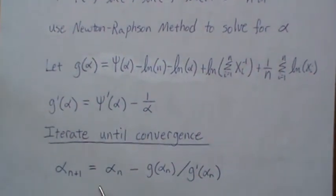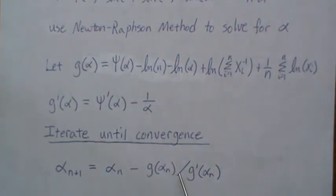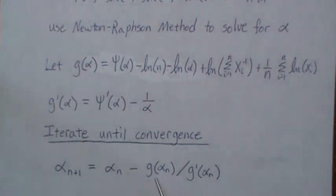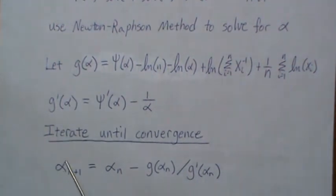So next, we iterate until convergence. So we have to come up with an initial guess of alpha. That's what this is, minus G of alpha n, and then divided by the derivative of alpha evaluated in. And then we calculate this and get a new estimate for alpha n plus 1.